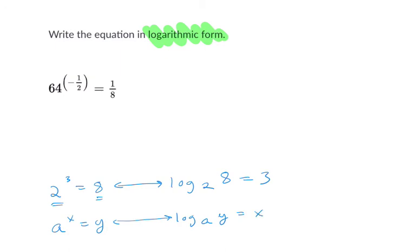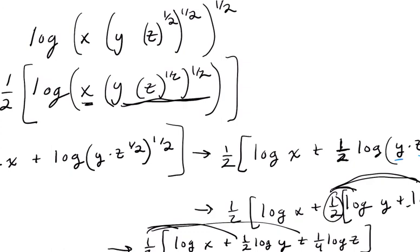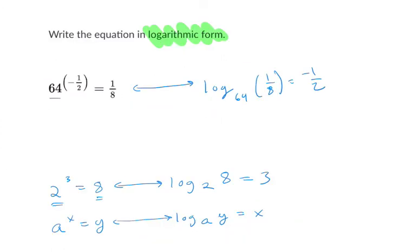So here, if I want to write it as a logarithm, I can say the log, look at my base, it's 64, base 64, of 1 8th, that's our result, equals negative 1 half. Oops. We have our result as 1 8th, and our exponent is negative 1 half. So you can see that there. All right, hope that helped.